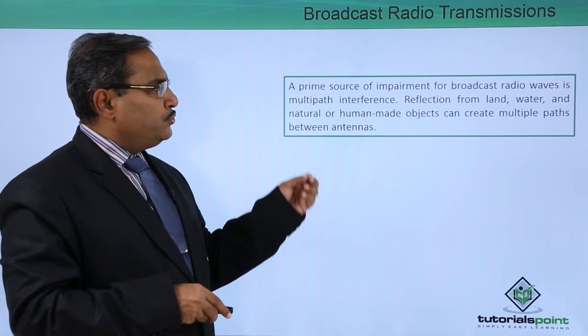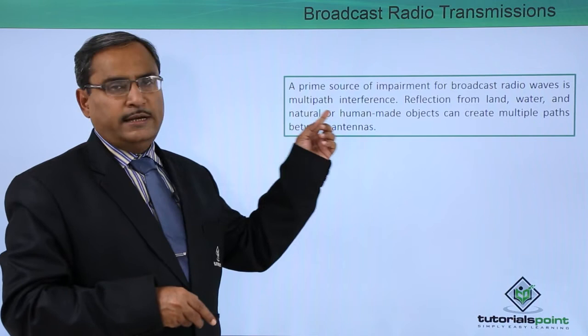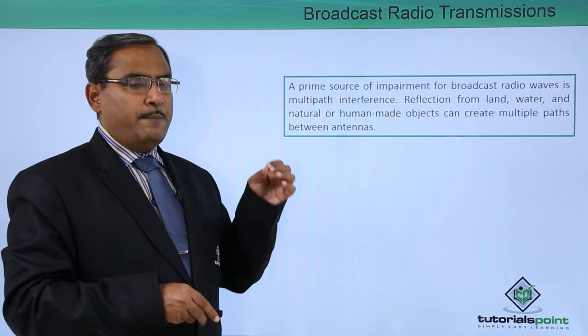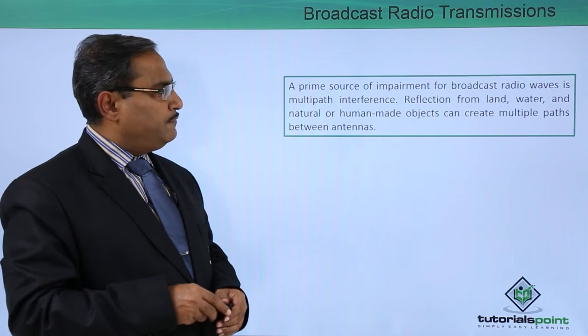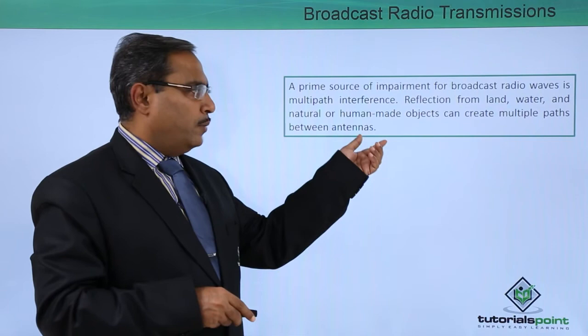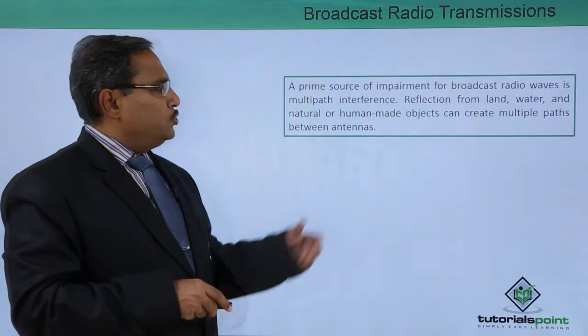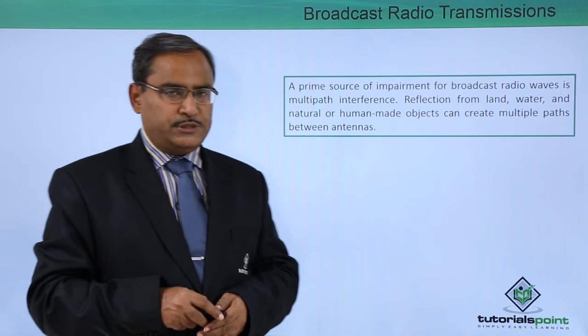A prime source of impairment for broadcast radio waves is multipath interference. Multipath means that from the source a radio wave is generated, but at the receiving end different signals follow different paths and reach the destination at different times — that is known as multipath interference. Reflection from land, water, and natural or human-made objects can create multiple paths between the antennas, and this is one of the key problems in broadcast radio transmissions.